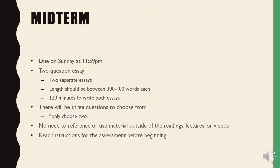When you click into the test you'll notice there are three questions to choose from. You are only going to choose two of those questions — answer the two you have the best understanding of, and you can skip the third. You'll answer one question in the text bubble provided, then skip down a couple of spaces and answer the second one. This is an in-text test: once you click in, your timer starts and you have 120 minutes to write both essays.